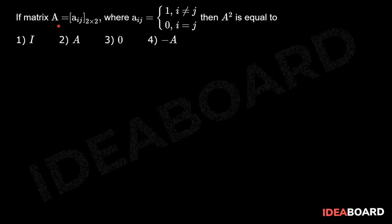If matrix A is Aij, 2 by 2, where Aij equals 1 when i is not equal to j, and equals 0 when i is equal to j, then A squared is equal to?